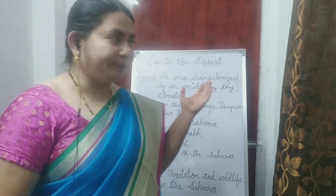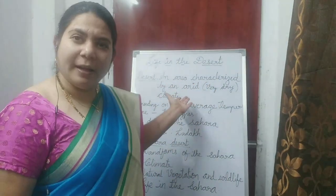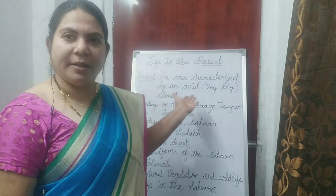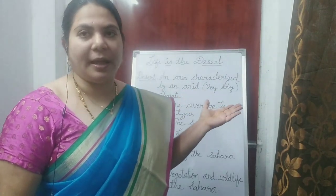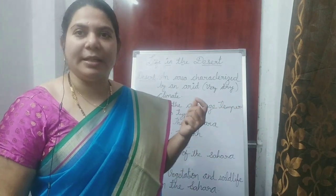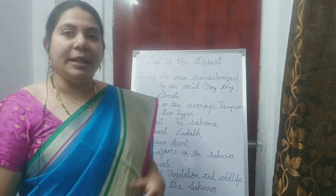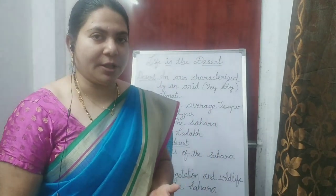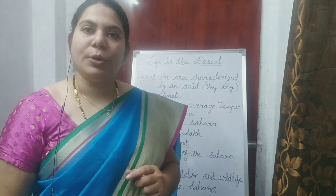So, what is a desert? First of all, an area characterized by an arid climate. Arid means very dry climate. That is a desert. A desert is an area characterized by an arid climate. Now, depending on the temperature — the average temperature — deserts are divided into two types.